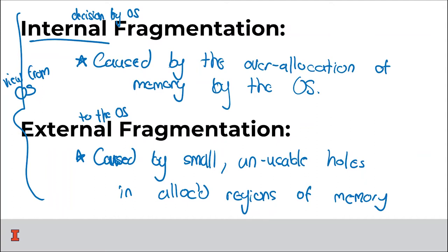Notice these are two different problems tackled with two different solutions. Internal fragmentation is this idea that we split memory into 4KB pages and there's always going to be some memory left over at the end of the four-kilobyte region — we waste some memory by doing paging. External fragmentation is the idea that once we as programmers get the memory, we end up creating holes with our malloc implementation.